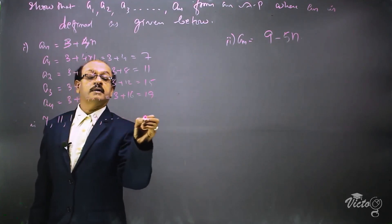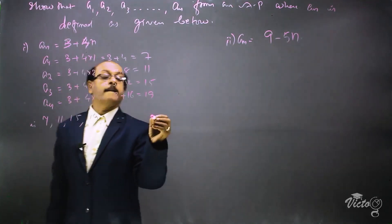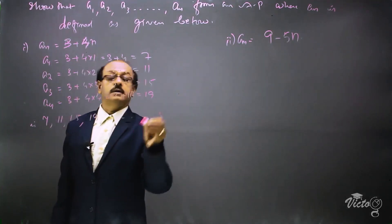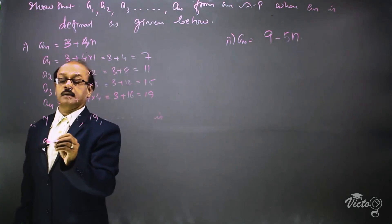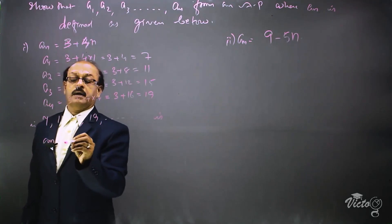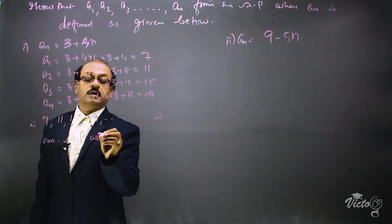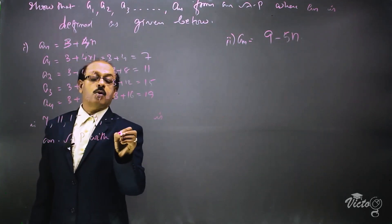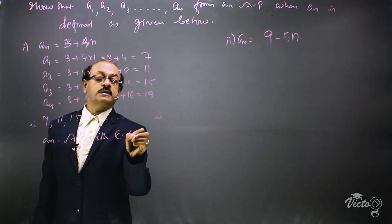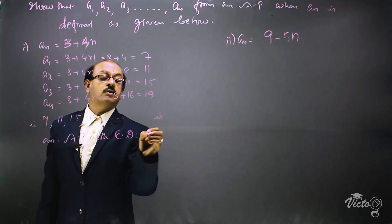The sequence 7, 11, 15, 19, etc. is an AP with common difference 4.